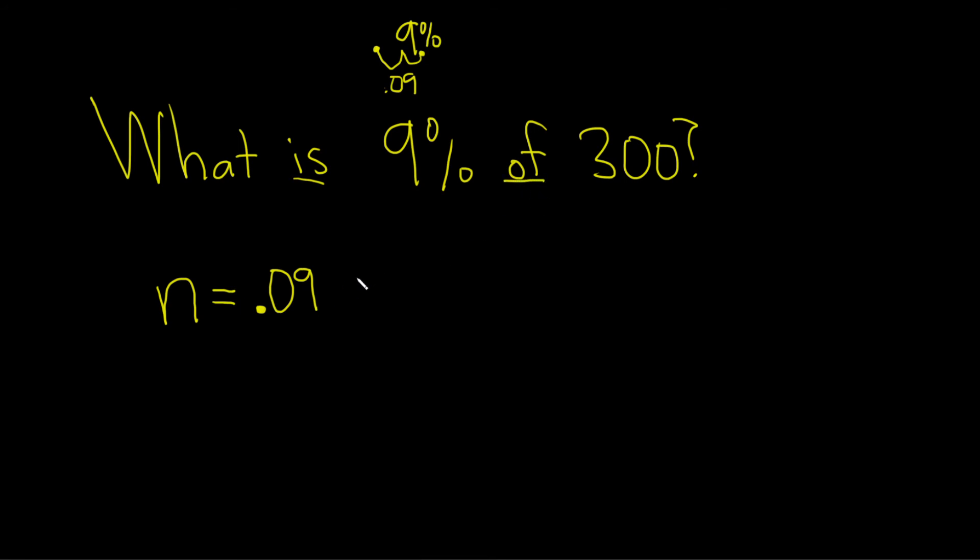Of means multiply in mathematics. So we have times, and then we have our 300 over here. So 3, 0, 0.